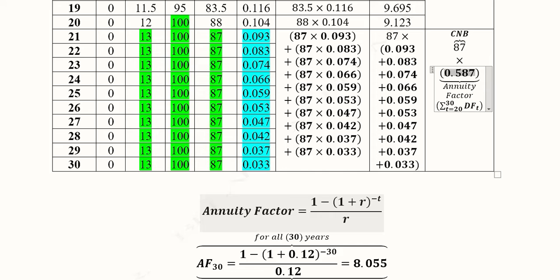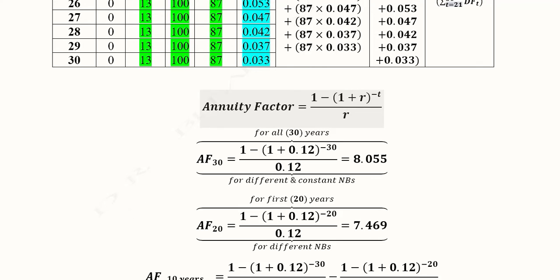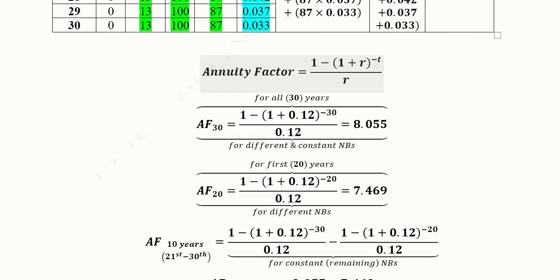The term 'annuity factor' is used because in this formula we have added the annual discounting factors — since it is composed of the discounting factor, we call it a factor. The formula shows the sum of all discounting factors from the 21st year till the 30th year. The general formula is: [1 minus (1 plus r) to the power of minus t] divided by r, where r is the discount rate and t is the number of years.